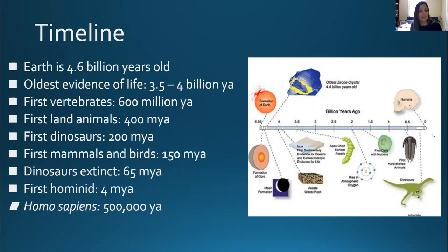When you look at hominids — the first human-like animals — they appeared about 4 million years ago. Homo sapiens, so humans, have been on earth for about 500,000 years, which is really just a blink of an eye in earth's life.